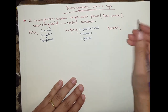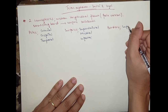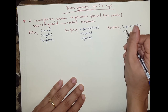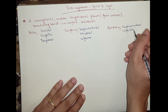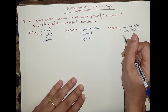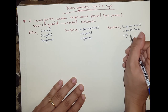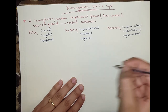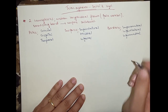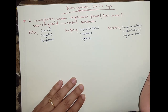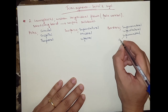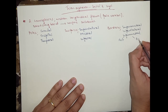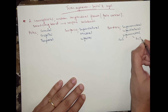Then we move on to the borders: we have the superomedial, the inferolateral, and the inferomedial. The inferomedial, like the inferior, is divided into the anterior and the posterior — the anterior containing the medial orbital part, and the posterior containing the medial occipital part.